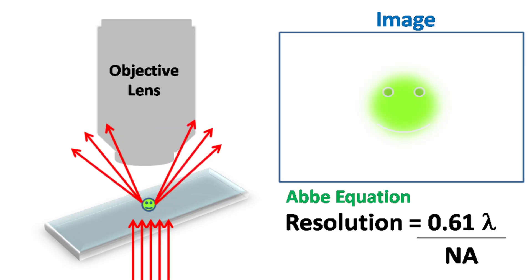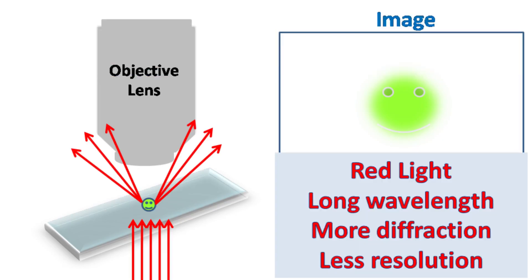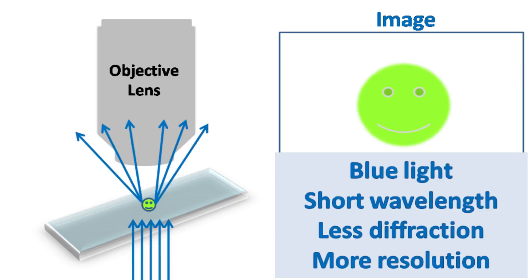The resolving limit of light microscope is given by Abbe's equation. According to this, this value is roughly 200 to 250 nanometers depending on the wavelength of light used. The red light suffers maximum diffraction because of large wavelength, and hence resolution obtained is low. While the blue light suffers less diffraction because of short wavelength, and hence resolution obtained is high.